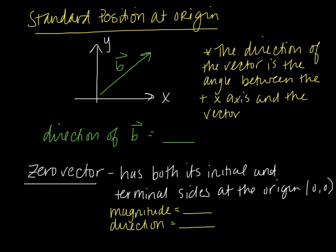The standard position of a vector is to be at the origin, so the initial point of the vector is at the origin, or the point (0, 0). The direction of the vector is the angle between the x-axis and the vector. For example, if this angle here is 45 degrees, that would be the direction of vector B. So vectors generally drawn on a coordinate plane are drawn with a positive angle with the x-axis and are drawn with an arrowhead indicating their direction.